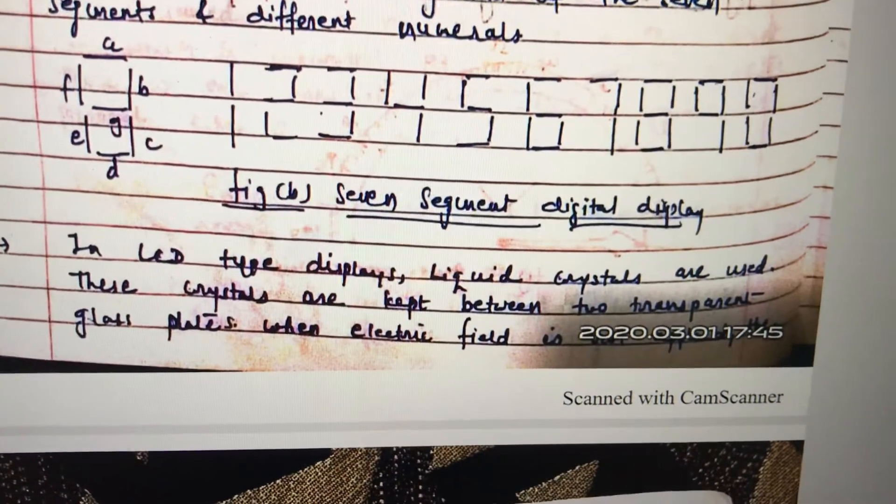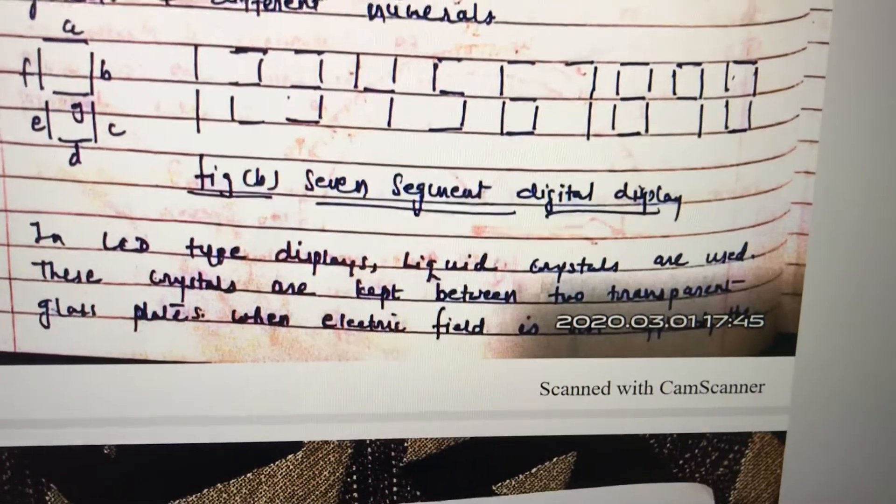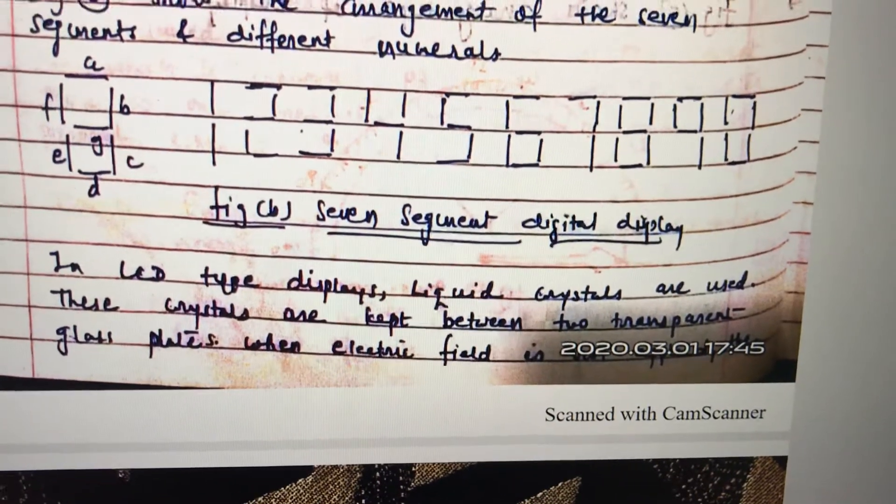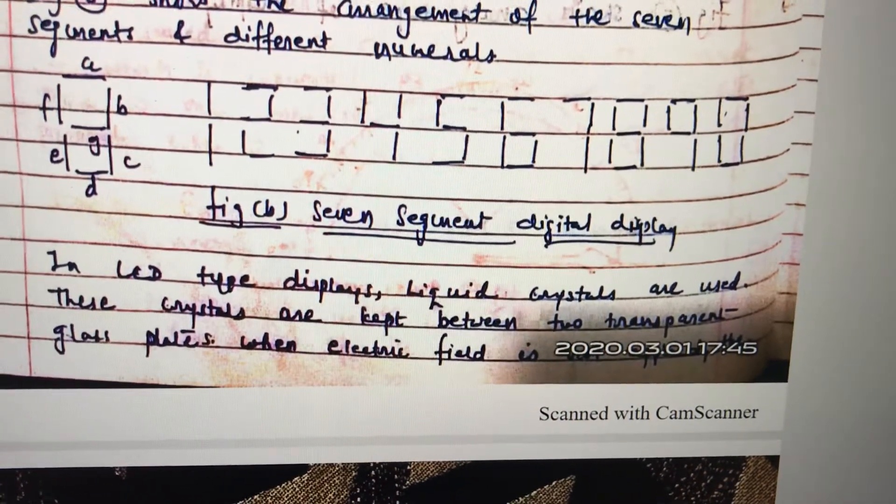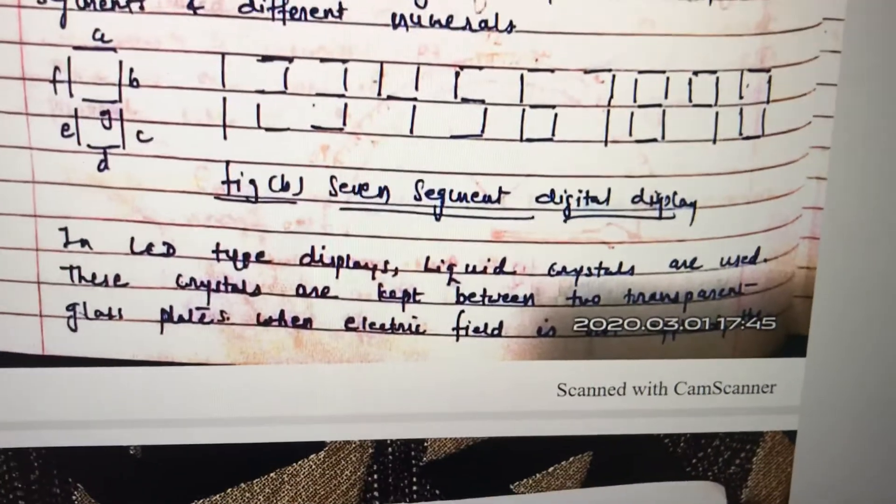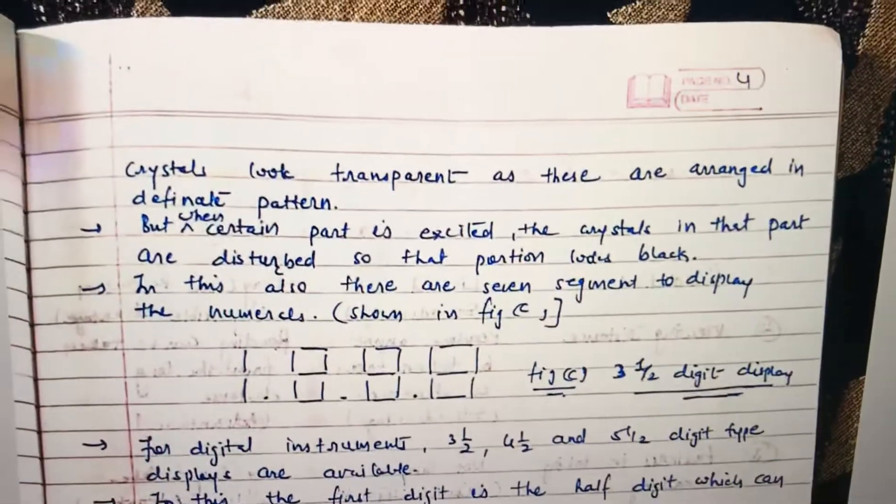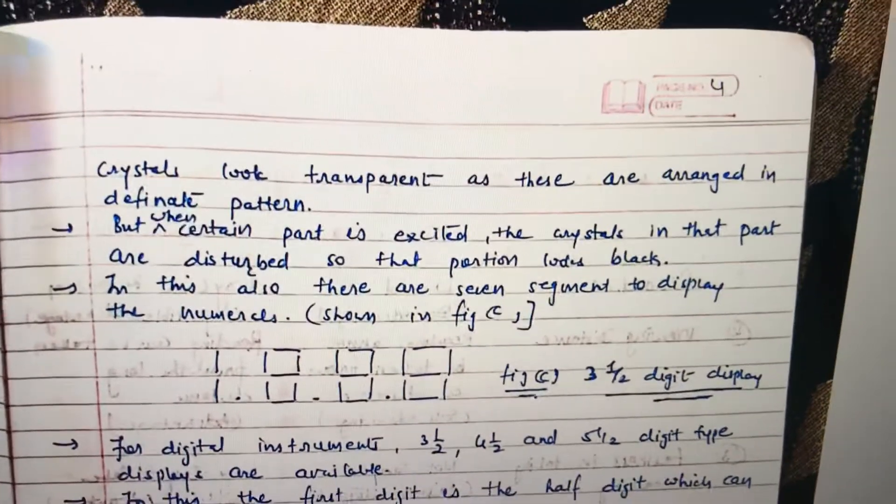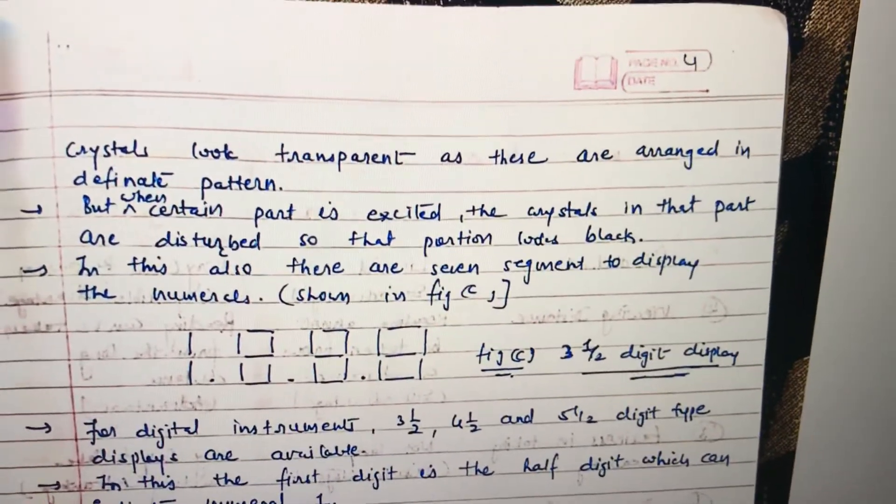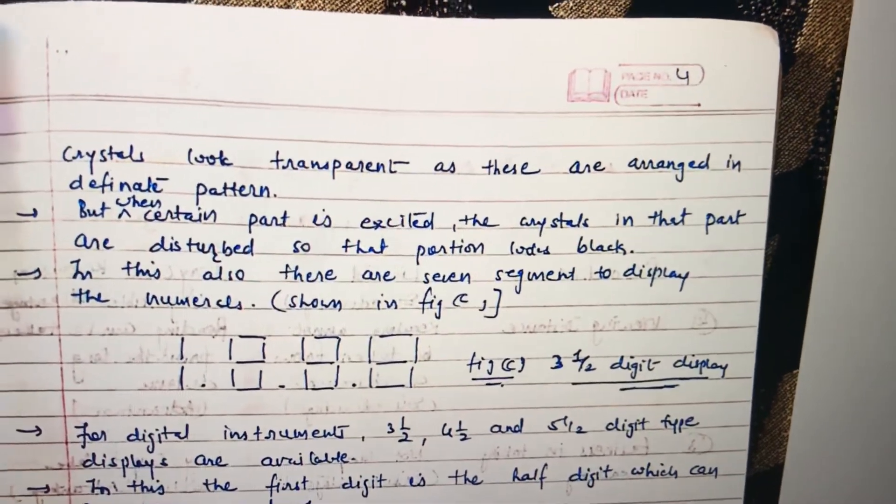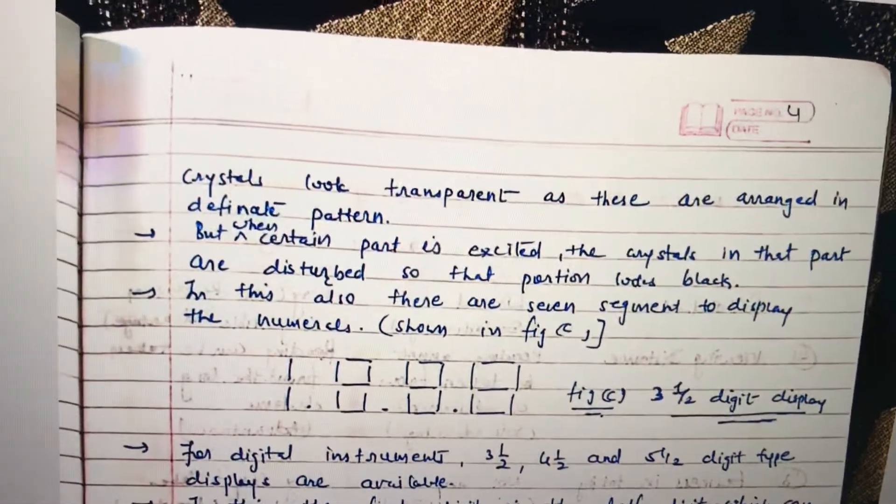In LED type display... in LCD type display, it is a liquid crystal display which uses crystals that are kept between transparent glass plates. LCD having these plates, when electric field is generated there, crystals will look transparent in it and those are going to be arranged in a definite pattern. So those patterns will show you the crystal display.